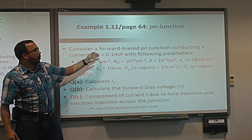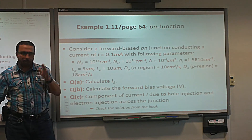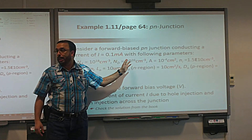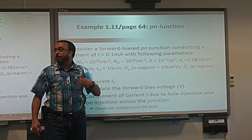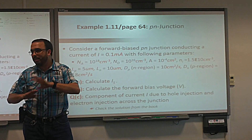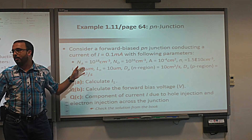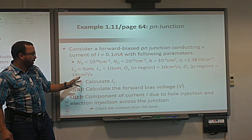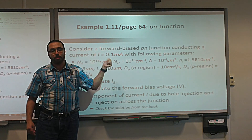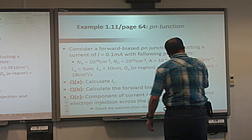First we read: consider a forward-biased PN junction. Forward bias means voltage is positive. The junction conducts a current of 0.1 milliamp. With the following parameters: L, A, N_D, N_A, and so on. The units are shown in red because they are important — if you make a mistake in the units, the results will also be wrong.